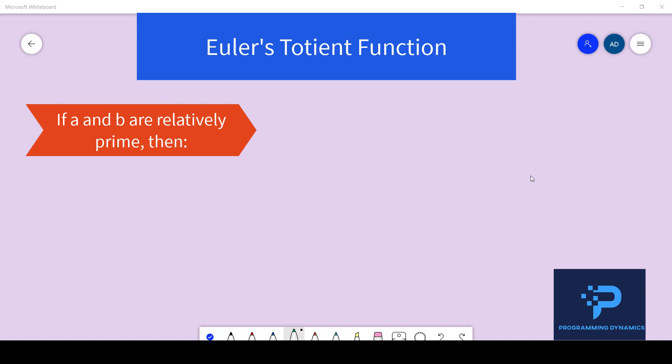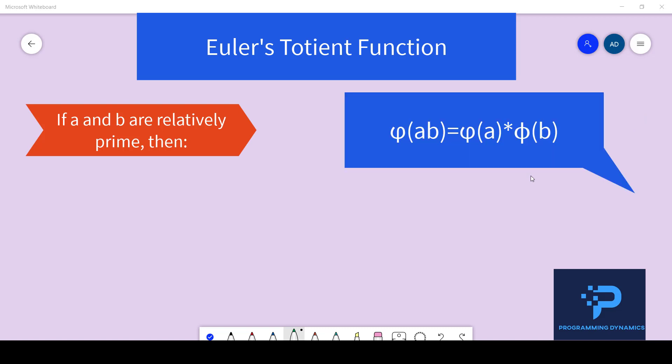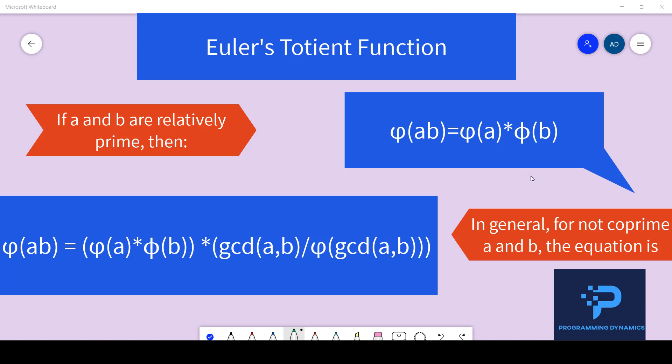The third property states that if a and b are relatively prime then Phi of a into b equal to phi of a into phi of b and an extension to this property in general for not co-prime a and b the equation becomes Phi of ab equal to Phi of a into Phi of b times GCD of a comma b divided by Phi of GCD of a comma b where d equal to the gcd of a comma b.